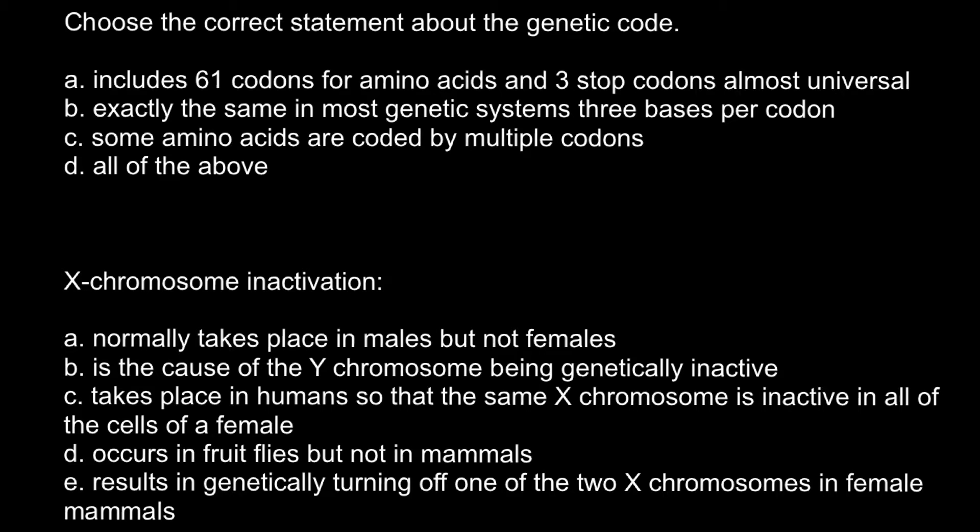Here are the four answers to choose from. Answer A: genetic code includes 61 codons for amino acids and three stop codons, almost universal. Answer B: exactly the same in most genetic systems, three bases per codon. Answer C: some amino acids are coded by multiple codons. Answer D: all of the above.